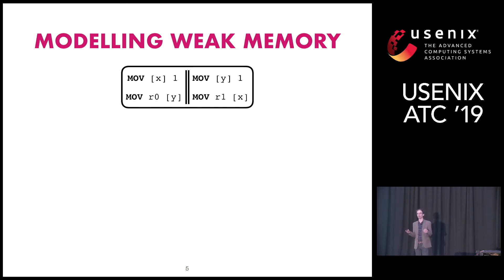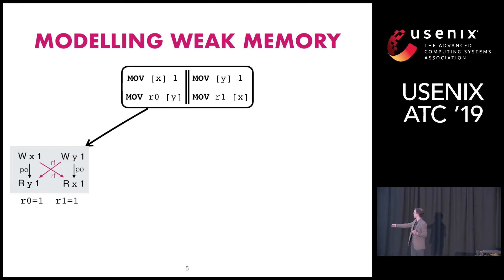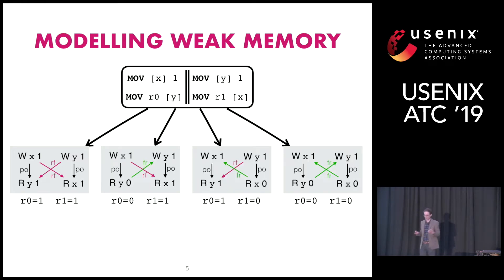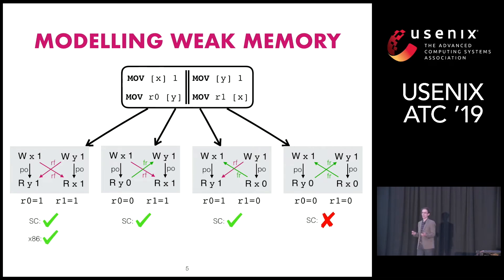The way weak memory models are formalised is like this: you take your concurrent programme and enumerate all possible executions. An execution is a mathematical graph where vertices represent events — writes and reads of certain values — ordered with edges, and arrows showing how data flows between events. This is a particular execution ending with 1-1; there are others with different outcomes. The task of the model is to take each execution graph and answer: is that allowed or not? For sequential consistency you'd say yes, yes, yes, and no. For x86, you'd say yes, yes, yes, yes.